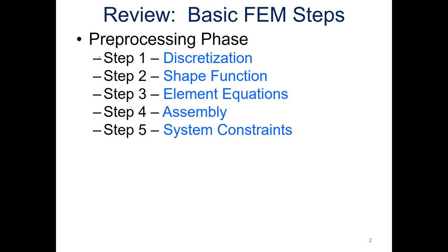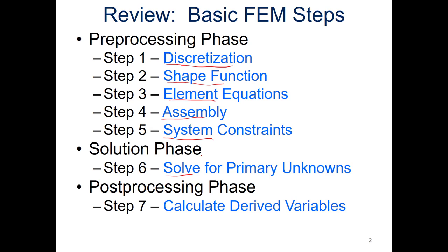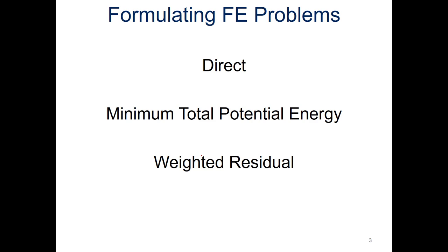We'll be going through these specifically with the direct method. The preprocessing steps include discretization, shape functions, element equations, assembly, and system constraints, followed by our solution phase — solving for what we want to find — and then doing some post-processing. We'll go into the specifics of each of these, and I'll have details about what we'll be doing introducing each section. We'll come back to this several times throughout the presentation.